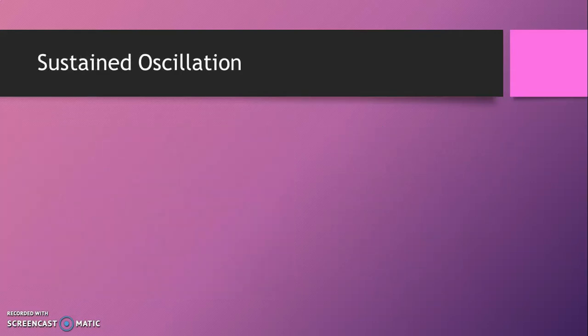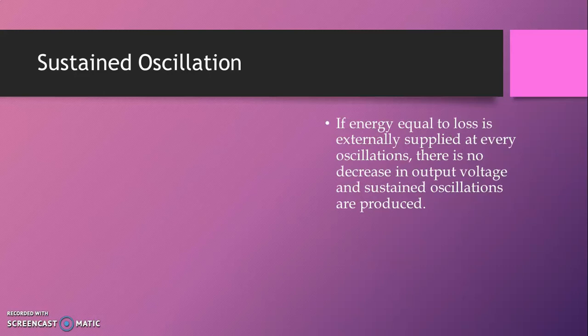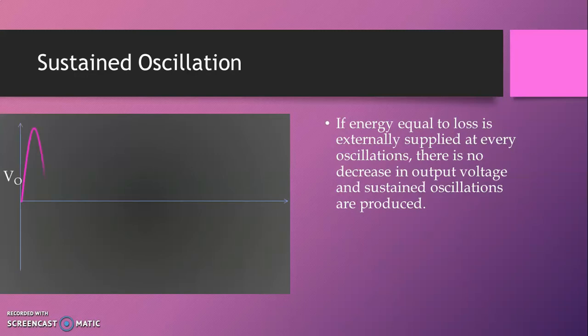We require sustained oscillations. If energy equal to the loss is externally supplied at every oscillation, there is no decrease in output voltage and sustained oscillations are produced. Because there is no input signal, we give biasing voltage only. During each oscillation, we have a certain amount of energy loss, so if we externally supply that much energy, we always have sustained oscillations. The magnitude of the output voltage remains constant.